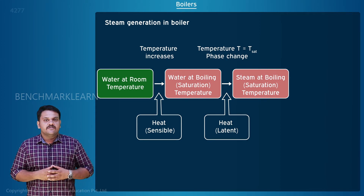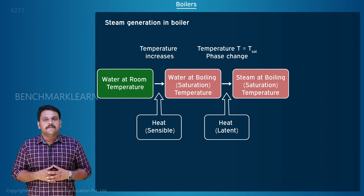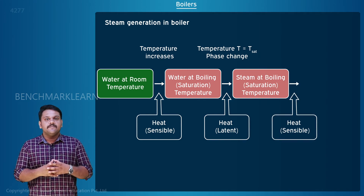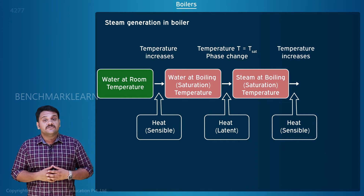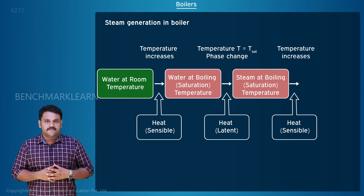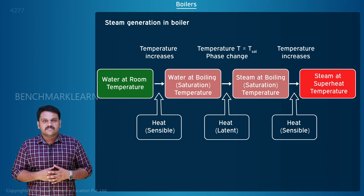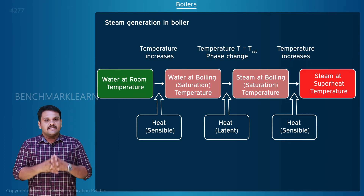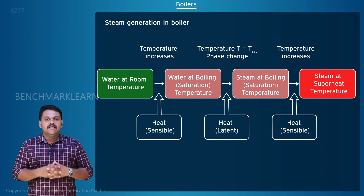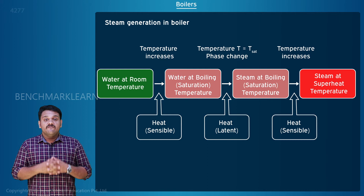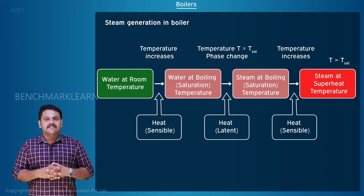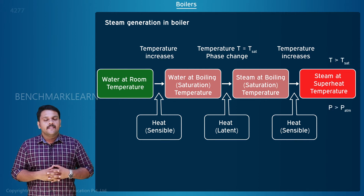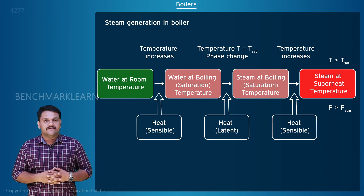After the water is fully converted to steam, further heating of steam causes its temperature to rise beyond the saturation temperature. This final heating process is called superheating. Thus, the water converts to superheated steam which has a temperature greater than its saturation temperature and pressure higher than the atmospheric pressure.